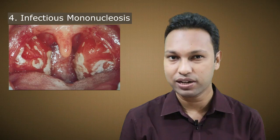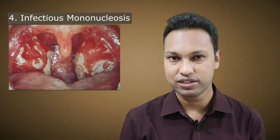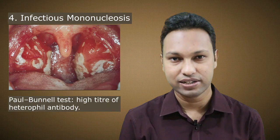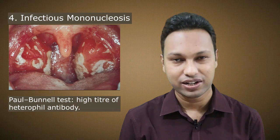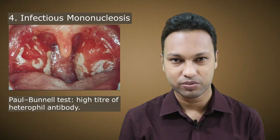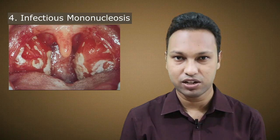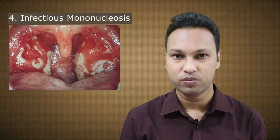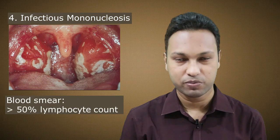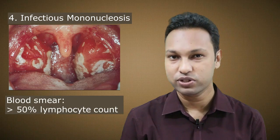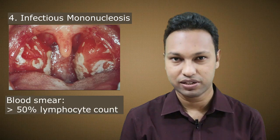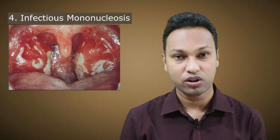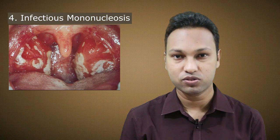The Paul-Bunnell test or monospot test will show a high titer of heterophile antibody. Blood smear will show a lymphocyte count of more than 50 percent, of which 10 percent are atypical. White blood cell count may be normal in the first week but rises in the second week.